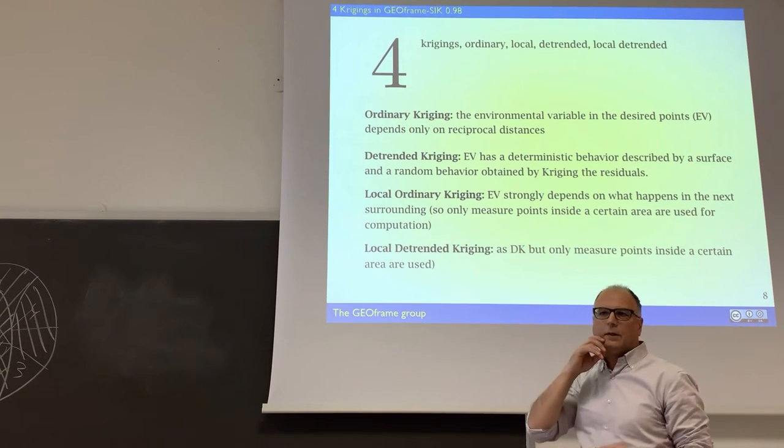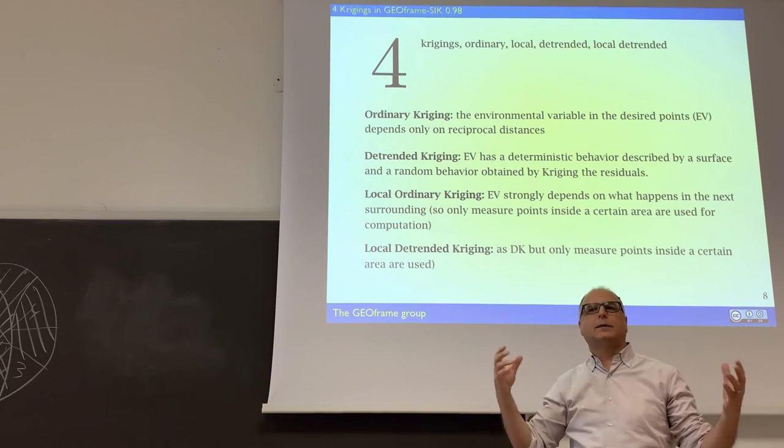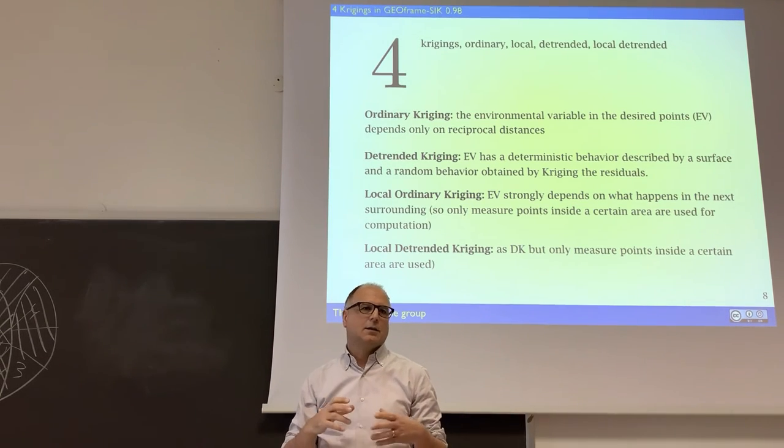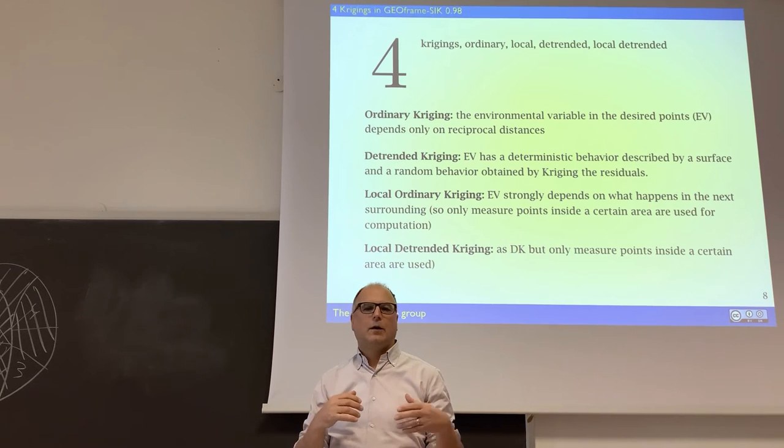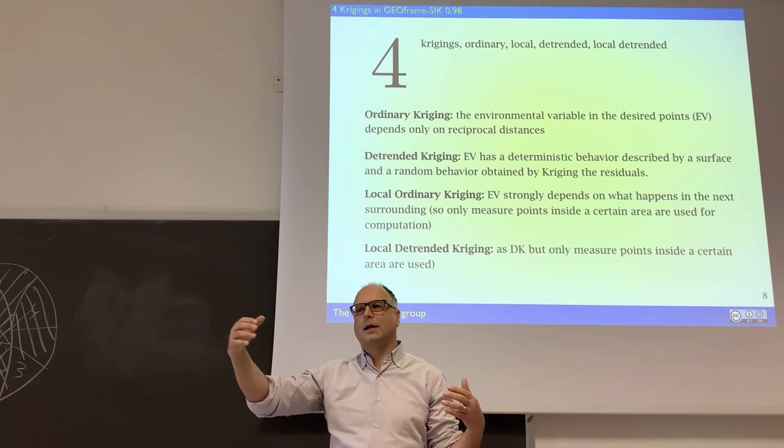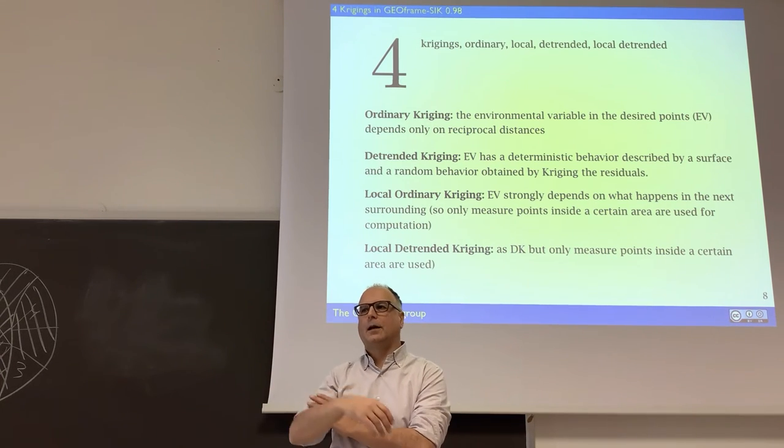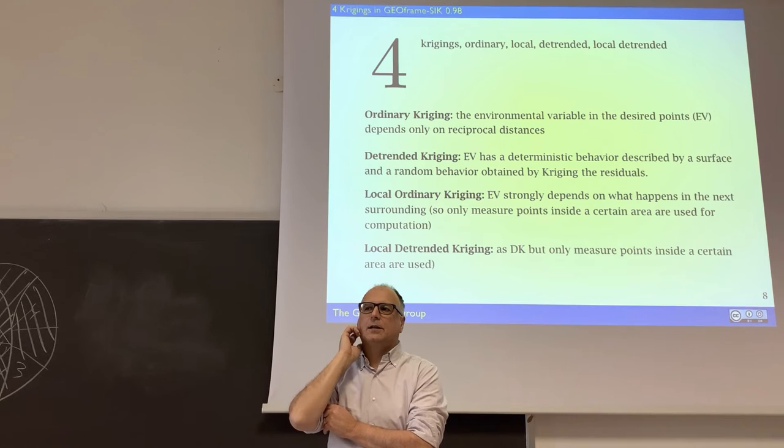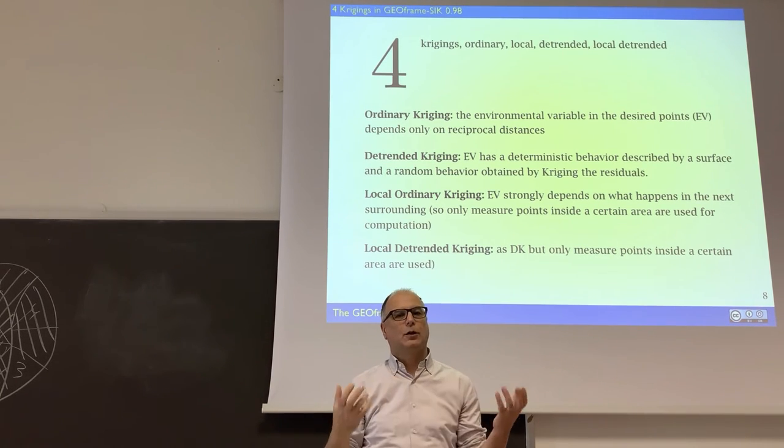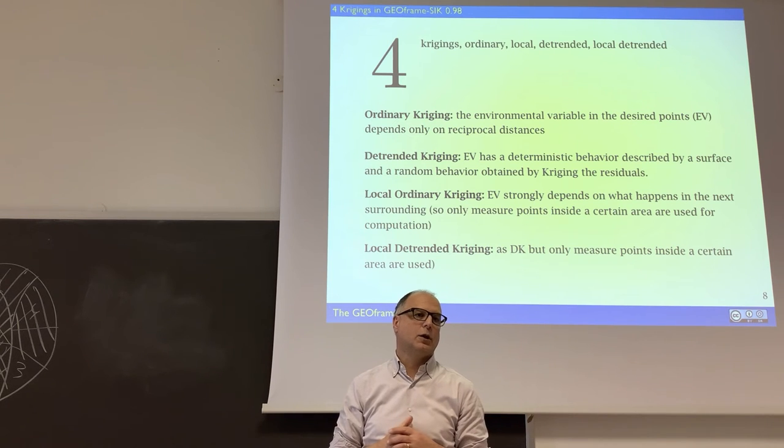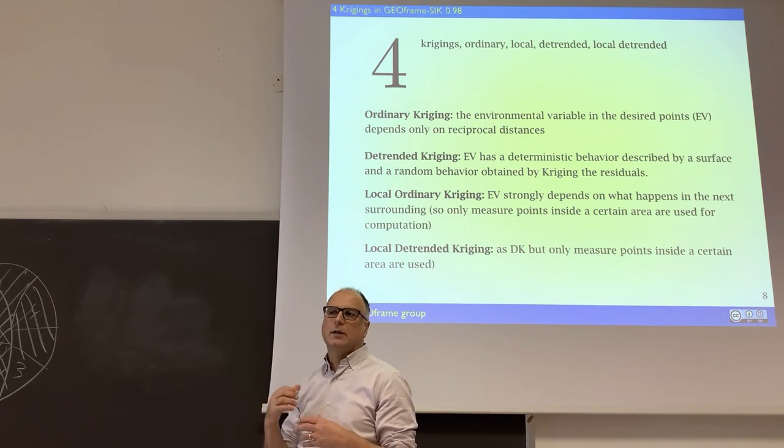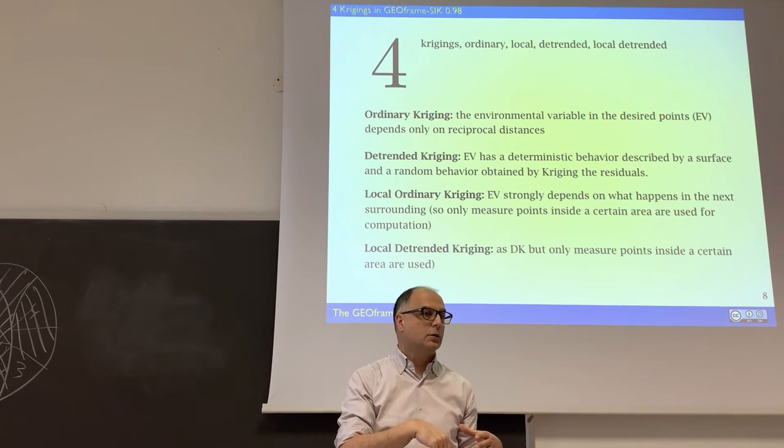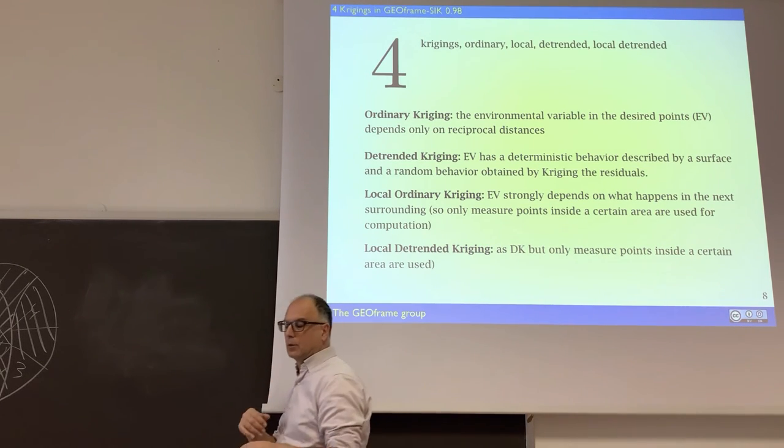Local and local, we assume that we have a hundred of points of measurements. But you may know that just the value of each point is determined by the surrounding points, and less depending on the points that are far away. So for computational purposes, it's a good thing to avoid to use all the points, and use just a set of those points. And so the local kriging here just selects a set of a number of points around the desired position.